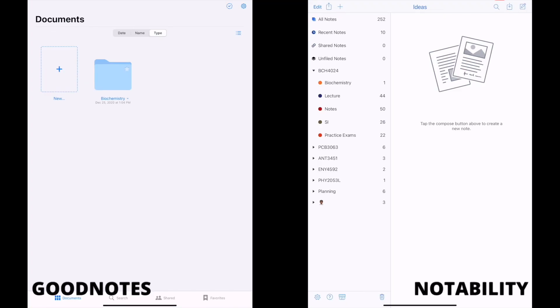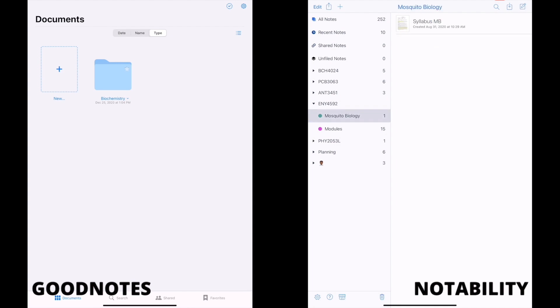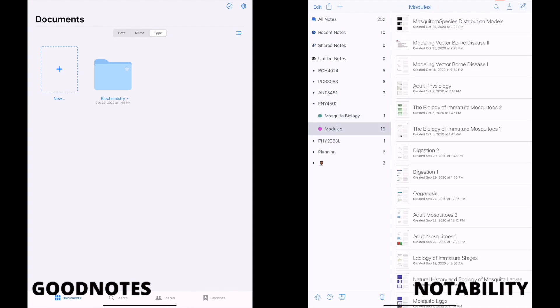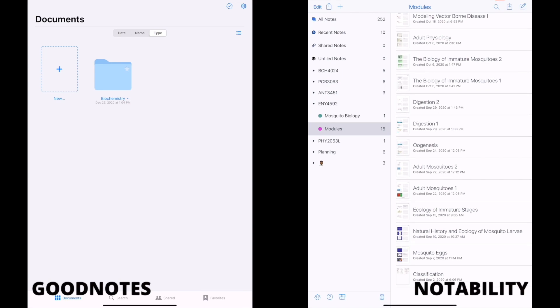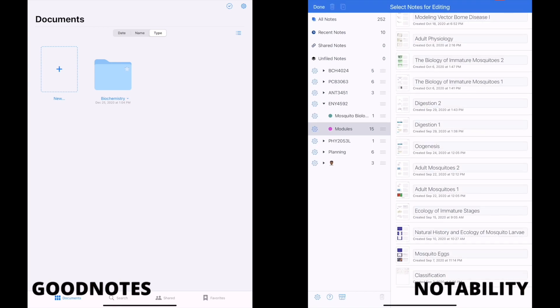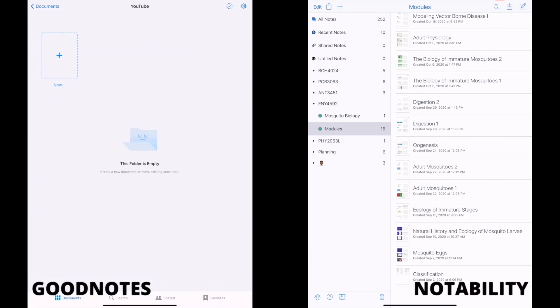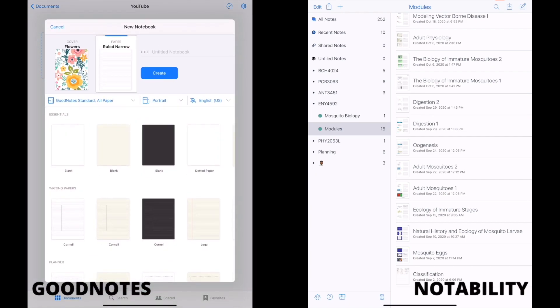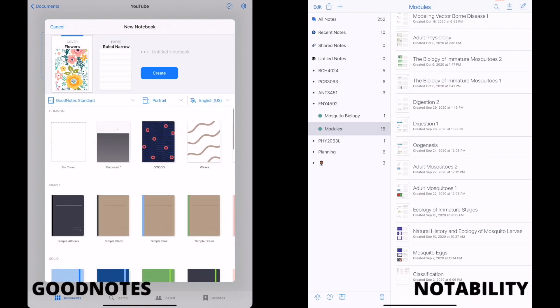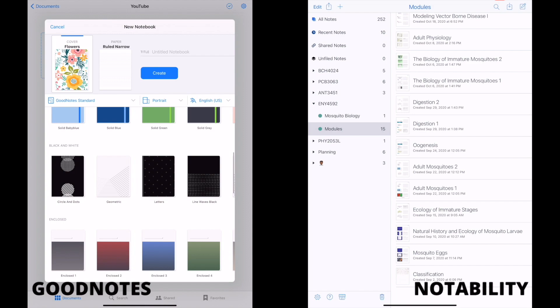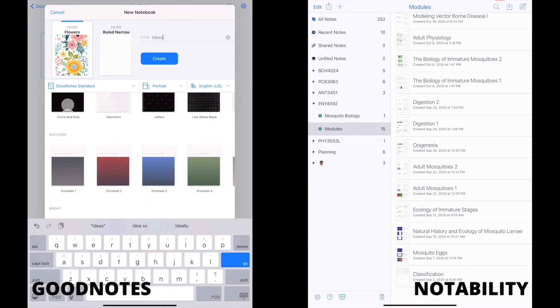There is a clear difference between how both apps allow you to organize your notes. Starting with Notability, there are dividers, which are the same thing as folders, and then there are subjects. Dividers hold subjects, and then subjects hold the notes. You can change the color of your subject, but there is a limited selection of colors. Now looking at GoodNotes, you can create folders. Each folder can hold notebooks or documents, images, anything that you create. GoodNotes gives you a ton of options for customizing your notebooks. There are a bunch of different paper templates, different covers for each notebook. There's just a lot that you can play with in GoodNotes, and one thing that I really like about the app.